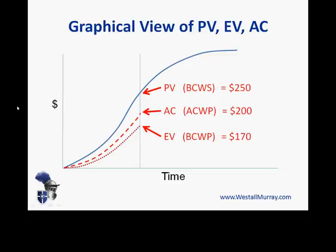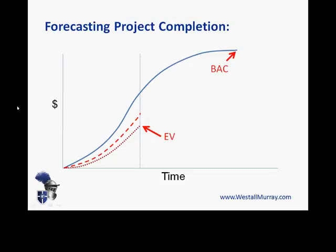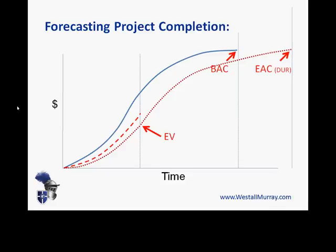As a reminder, we looked at how we can derive planned value, actual costs and earned value. What we're going to do now is look at that original plan for the end of the project — our planned value for the end of the project, also known as the budget at completion — and see what happens if we project forward our earned value. We'll see that if we carry on with a similar trajectory, our estimate at completion for duration, our forecast for the duration of the project, is going to be longer than the original end date.